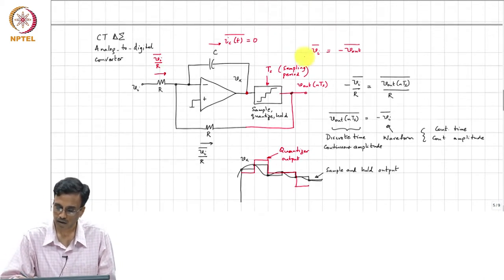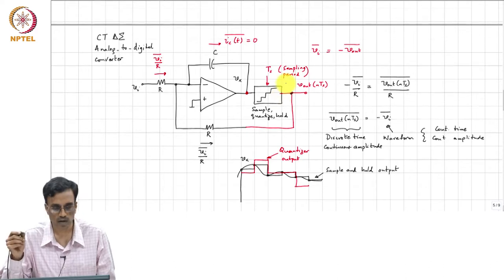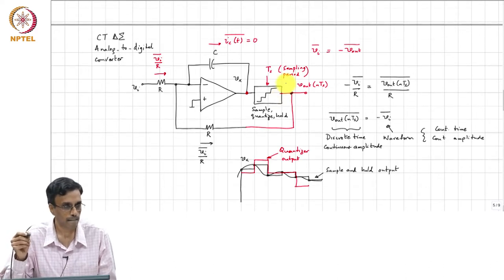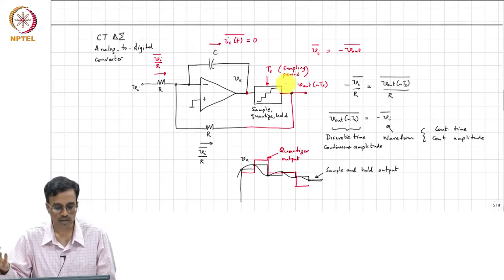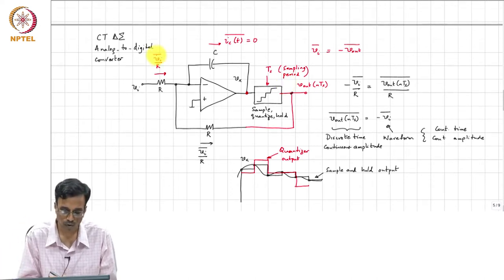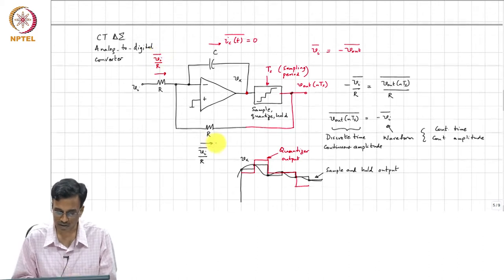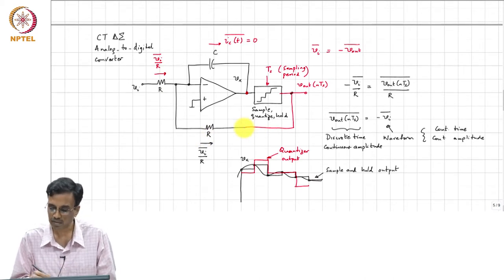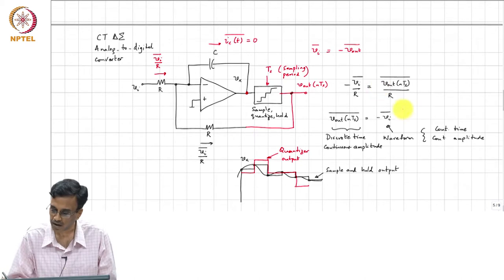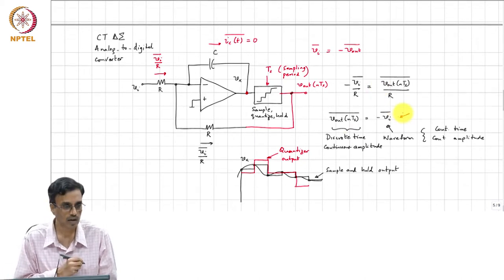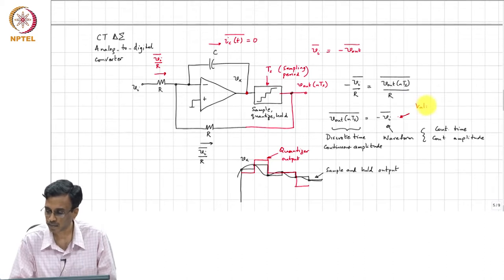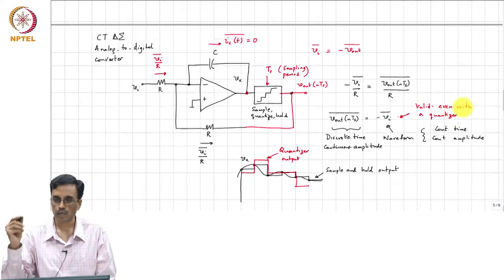What comment can we make about the average current to the capacitor the moment you introduce a quantizer? The current to the capacitor must still be 0 on average, and therefore V_I on average by R must still be the same current flowing through the feedback resistor. Therefore, V_out — this must still be valid even with a quantizer.